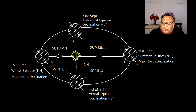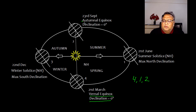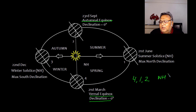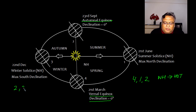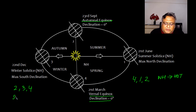Let us talk about this journey. As the earth moves from position 4 to 1 to 2 — from vernal equinox to autumnal equinox — the north end is tilted towards the sun, so the northern hemisphere receives more energy and is comparatively hot. From position 2 to 3 to 4 — autumnal equinox to vernal equinox — the south end is tilted towards the sun, so the southern hemisphere is more exposed and hot, while the northern hemisphere is cold.